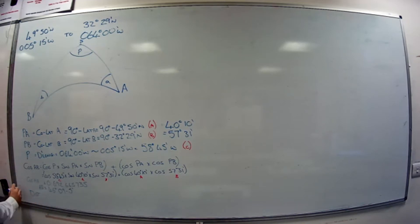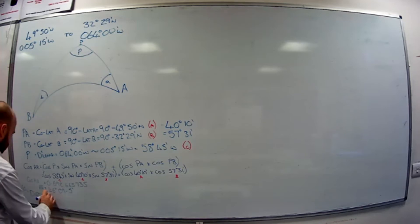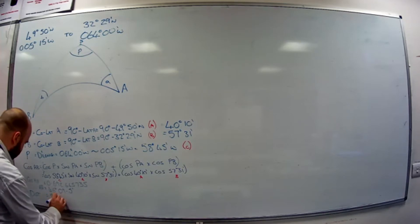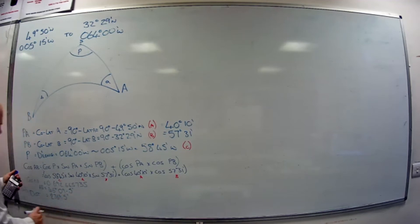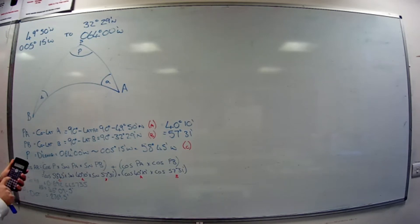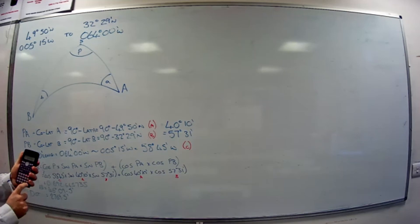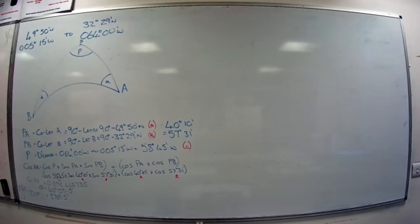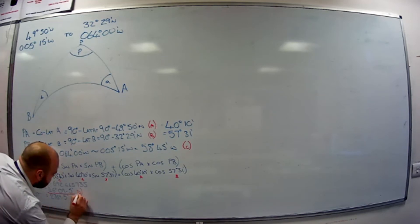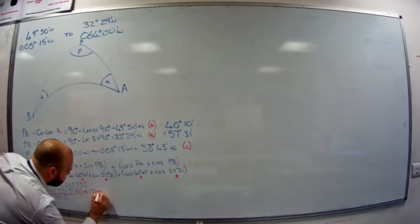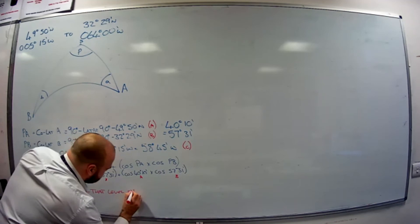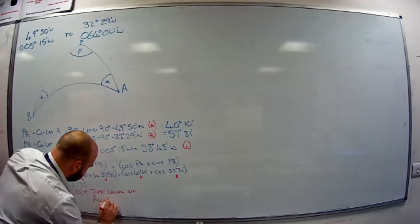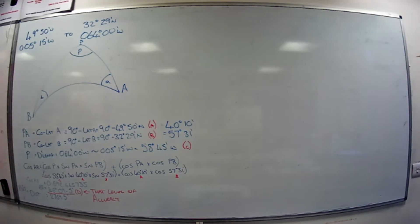We then multiply AB by 60 to convert degrees to nautical miles. So 46°09.5' × 60 gives us the great circle distance. We save the full precision value of AB as D in our calculator memory for use in subsequent calculations.